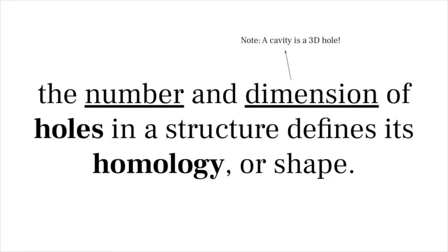These holes characterize the general shape of the data. The big question is, how can we quantify them? To do this, we employ a method called persistent homology. That's a big phrase, so let me break it down. Roughly speaking, the number and dimension of holes in a structure defines its homology, or its shape. Therefore, persistent homology is all about finding out which holes persist as we connect more dots.